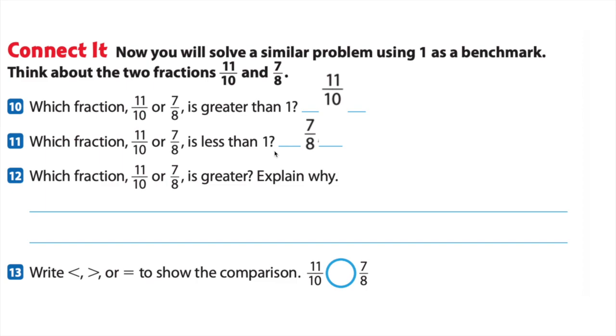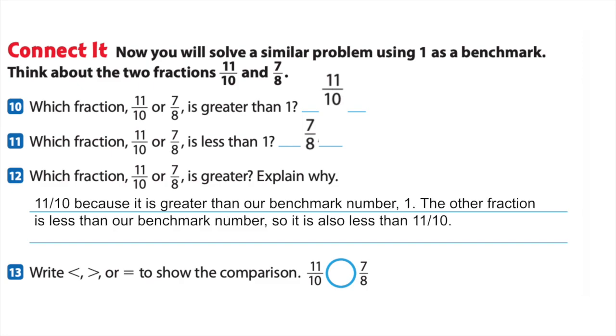Using what we just figured out, which of those fractions is greater? Well, one of the fractions was greater than one and one of the fractions was less than one. That tells us which of those is greater in general. Eleven-tenths is greater because it's bigger than our benchmark number one. If the other fraction is less than our benchmark number, it's also less than eleven-tenths.